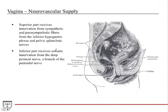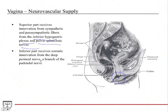The superior part of the vagina receives innervation from sympathetic and parasympathetic fibers via the inferior hypogastric plexus — the main central area for the autonomic nervous system in the pelvis — and also via the pelvic splanchnic nerves. The inferior part of the vagina, closer to the skin forming the external orifice, receives somatic innervation from the deep perineal nerve, which is a branch of the pudendal nerve, because that region is closer to skin where somatic innervation occurs.